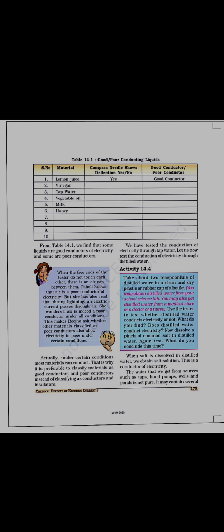Examples of insulators include tap water, vegetable oil, milk, and honey — these will not conduct electricity. If you talk about simple water, it will not show electrical conductivity. But if we talk about distilled water, current can actually flow through it — it may be a good conductor. The activity says: take about two teaspoons of distilled water in a clean dry plastic or rubber cap and use the tester to see whether distilled water conducts electricity.